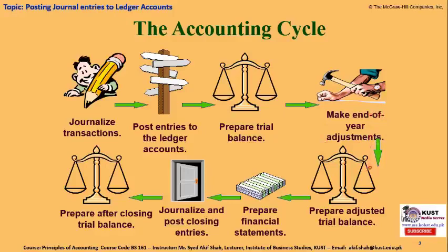This mistake will continue to the next step until we make certain year-end adjustments and rectify it. Only then can we move toward an adjusted trial balance, from which we make financial statements, close down the nominal accounts, and finally make an after-closing trial balance. So the important step is step number one: to journalize the economic event properly and correctly. The rest of the task will be quite easier. Let's move toward our second step of posting entries into the ledger accounts.